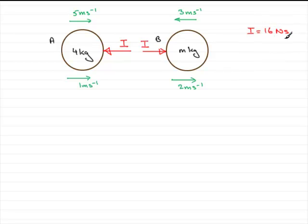So if I use the impulse equation that was that I equaled the change in momentum mv minus mu. Then you'll find that this falls out very easily.